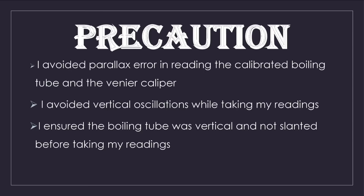What were some of the precautions we took in this experiment to get accurate results? We avoided parallax error in reading the calibrated boiling tube and the vernier calipers — read at eye level to ensure accurate readings. Avoid vertical oscillations; make sure the boiling tube is steady because it is mounted on top of water. I ensured the boiling tube was vertical and not slanted when readings were taken. Avoid all these errors to get accurate results.